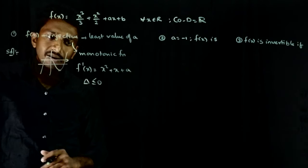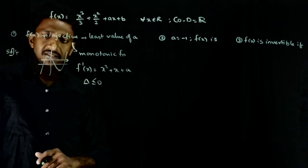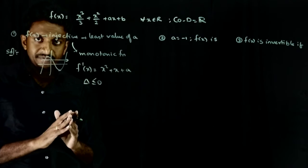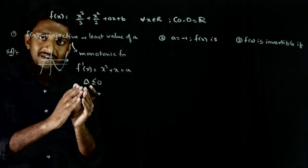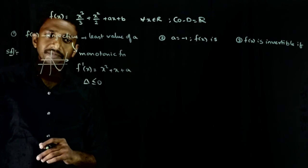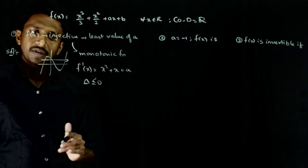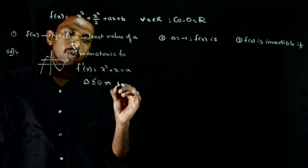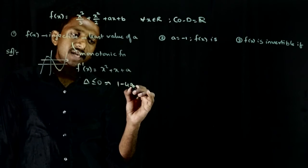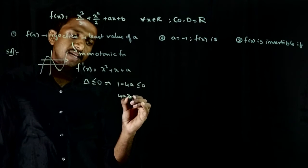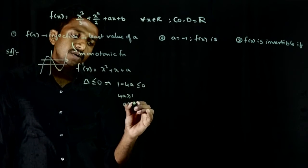So, delta less than or equal to zero should hold, such that the function either does not have any maximum or minimum. Otherwise, if there's a critical point, it should be an inflection point. Delta has to be less than or equal to zero. This implies delta is b squared minus four ac, which is 1 minus 4a less than or equal to zero. So, 4a is greater than or equal to 1, a is greater than or equal to one by four.